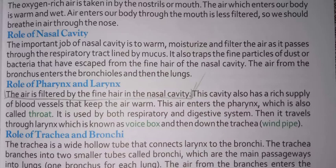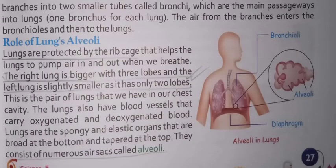Role of the trachea and bronchi: the trachea is a wide hollow tube that connects the larynx to the bronchi. The trachea branches into two smaller tubes called bronchi, which are the main passageways into the lungs — one bronchus for each lung. The air from the bronchi enters the bronchioles and then the lungs.